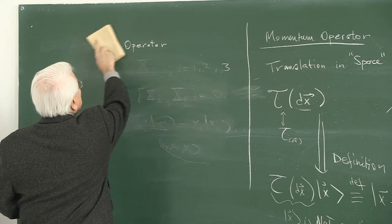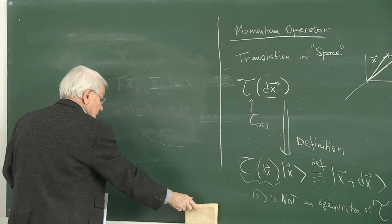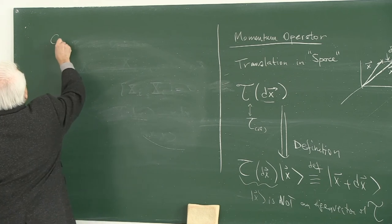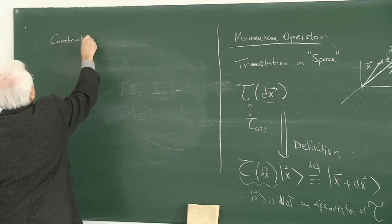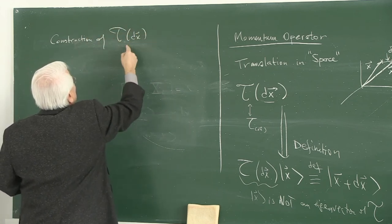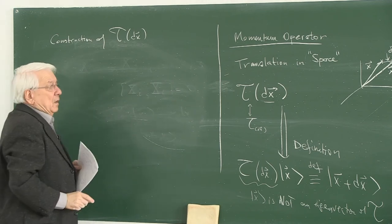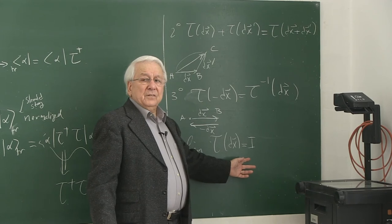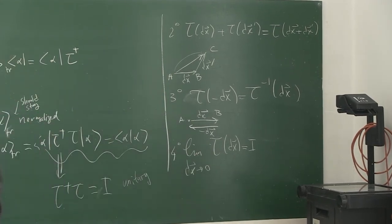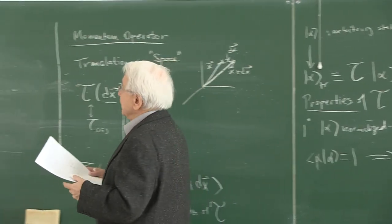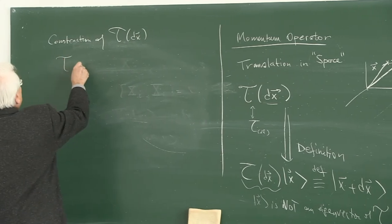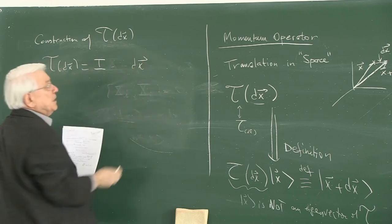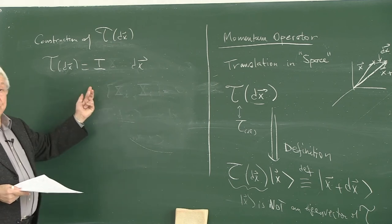Let's use those properties to construct the infinitesimal translation operator. The very last property tells us it should differ from the identity by an infinitesimal amount proportional to dx itself, because if you let dx go to zero it must reduce to one. So the leading term is the identity, and there must also be a term proportional to dx linearly, so that turning it off reduces back to the identity.